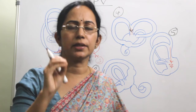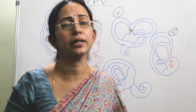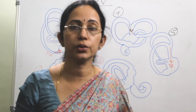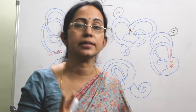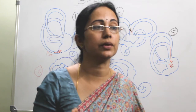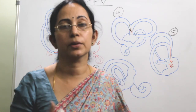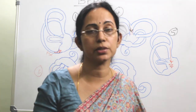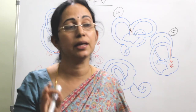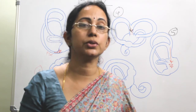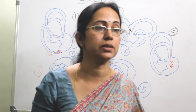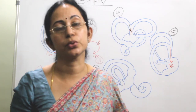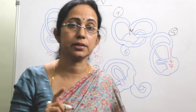If the vertigo is not getting relieved and becomes intractable, there are two surgical options. One is occlusion of the ampullated end of the posterior semicircular canal. The second is section of the posterior ampullary nerve — singular nerve excision — which is singulotomy. Singulotomy plugs the posterior semicircular canal. These are the two surgical procedures that can be tried in intractable BPPV.